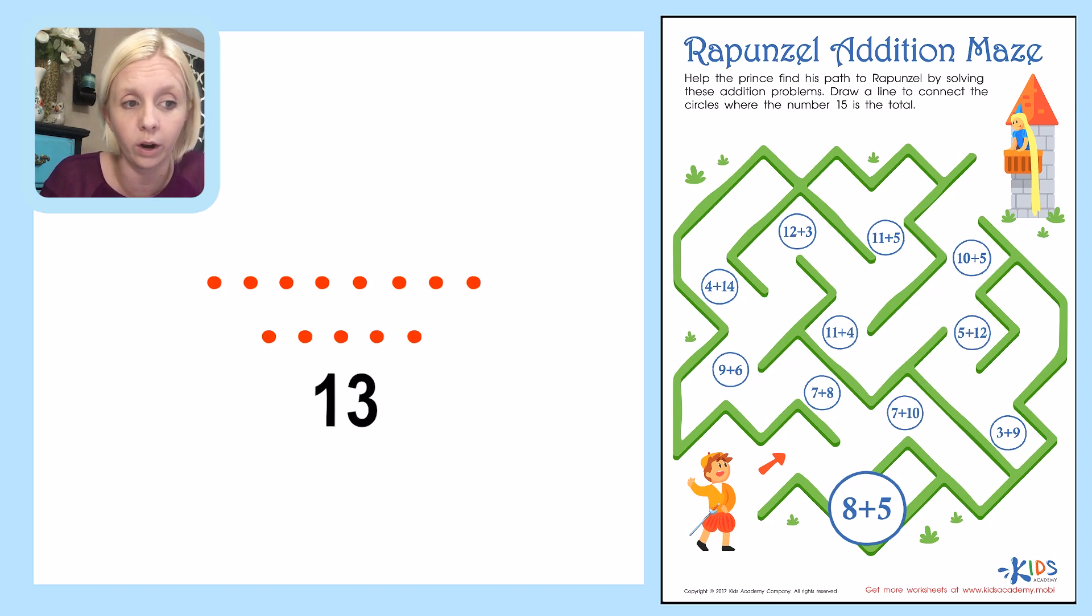So the total to 8 plus 5 right here is 13. Now it didn't say I need to write that down, but I'm going to go ahead and write that down just in case. So it says number 15. So that's not the correct number. So now I'm going to need to go on to the next one.